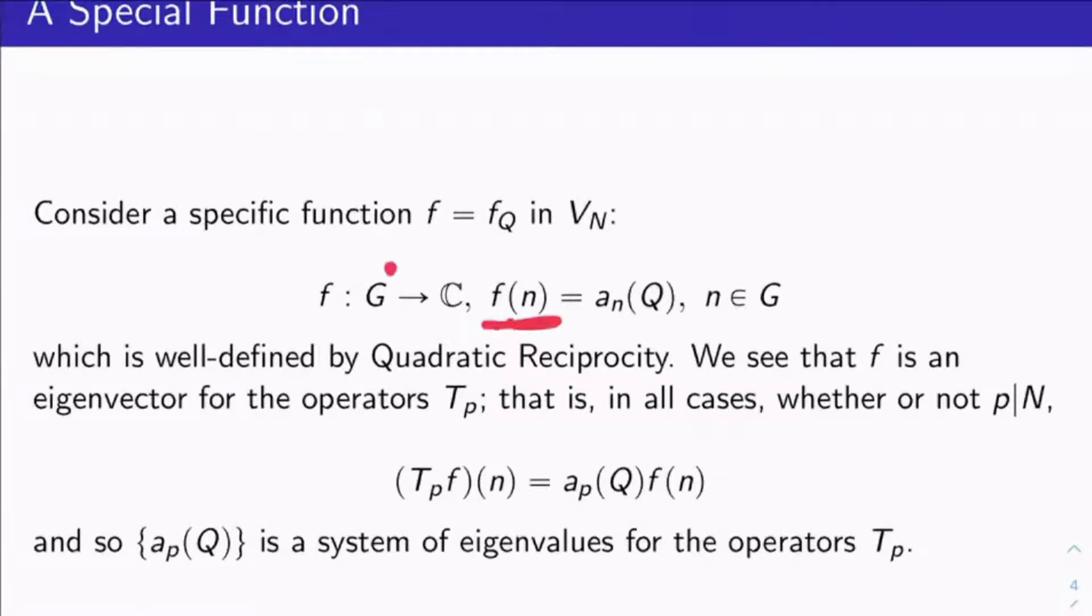It takes in an n in G, and it spits out a_n(Q). Now this is, we just got done talking about how this is well-defined. a_n(Q) is defined mod big N, right? And so this is a well-defined function by quadratic reciprocity.